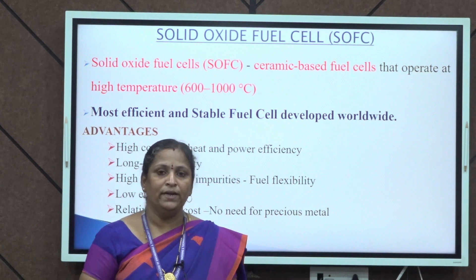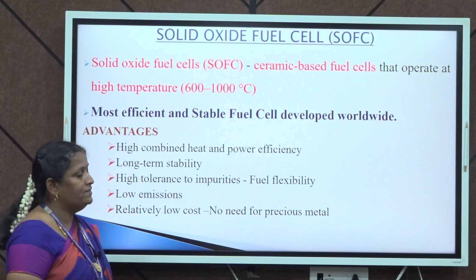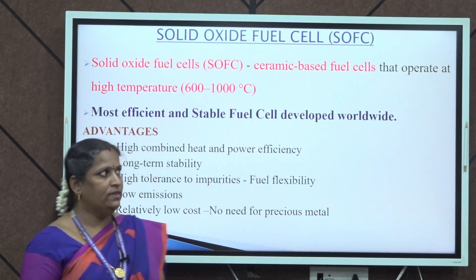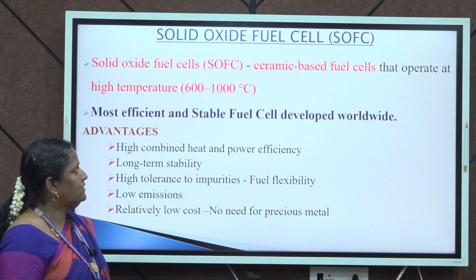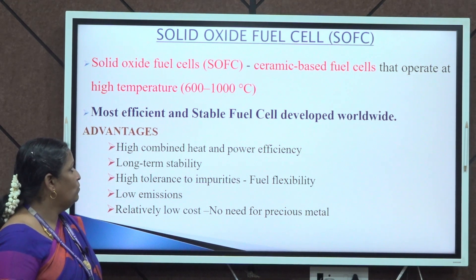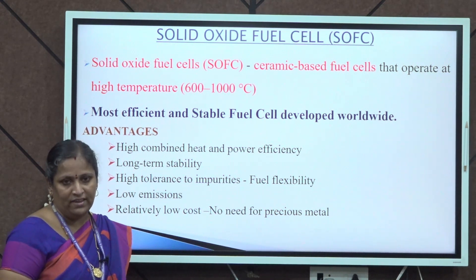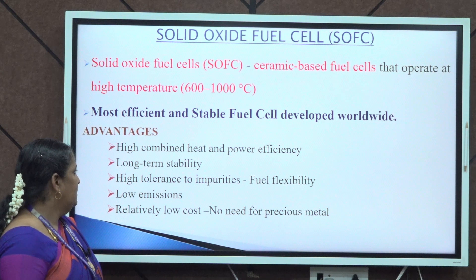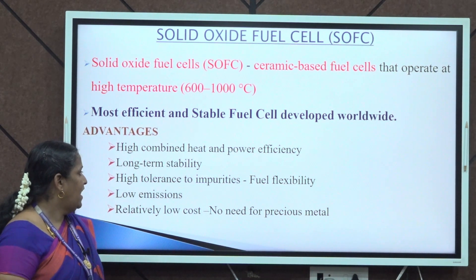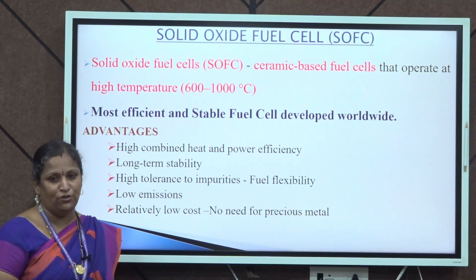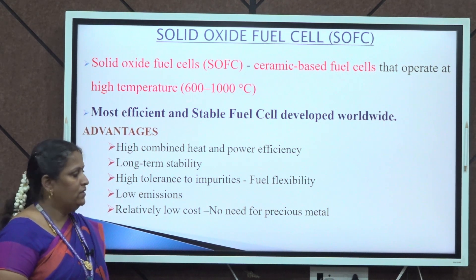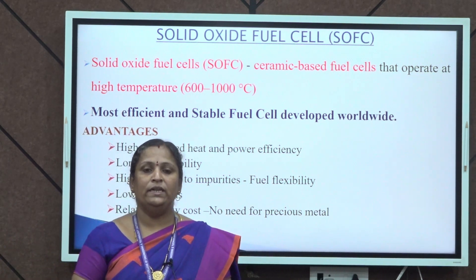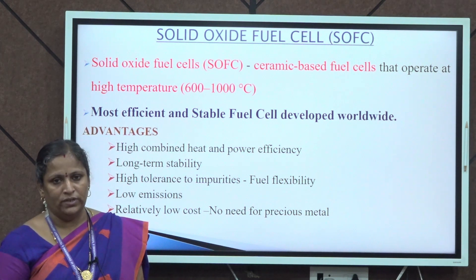Let us enter into our topic. The topic is solid oxide fuel cell. Solid oxide fuel cell is otherwise called a high temperature fuel cell because it operates at a very high temperature among all other fuel cells. Its operating temperature is around 600 to 1000 degrees Celsius and it is a ceramic-based fuel cell. It is the most efficient and stable of all the well-established fuel cell systems. It has a high combined heat and power efficiency, very good long-term stability, high tolerance to impurities, good flexibility in choosing the fuel, less emissions, and it is relatively low cost — unlike other fuel cells that need costly platinum electrodes, here we can go with alternate materials.